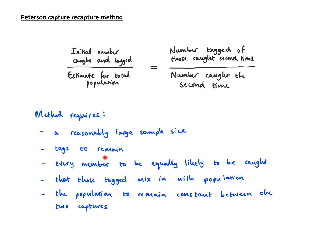Tags need to remain so they don't get lost. The initial number that were caught and tagged, those tags remain. Every member is equally likely to be caught. Those caught the first time—every member from the population was equally likely to be caught. Same for the second time—every member of the population is equally likely to be caught. This is another assumption the method requires.